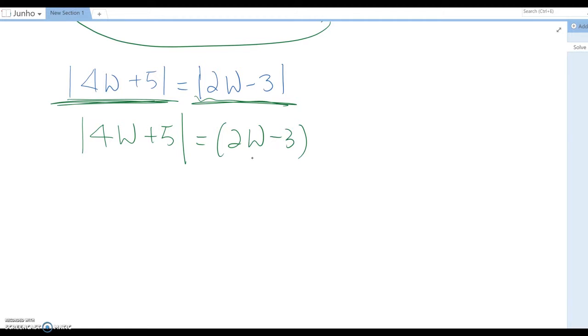Such as 4w + 5 = 2w - 3, or 4w + 5 = -(2w - 3), or -4w...